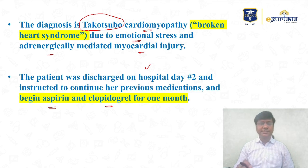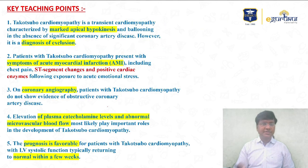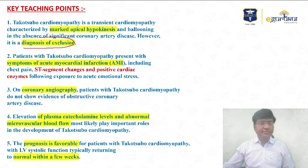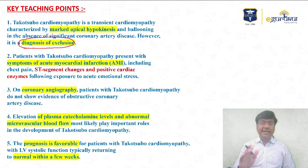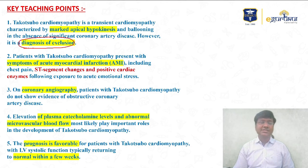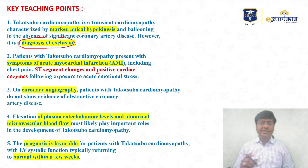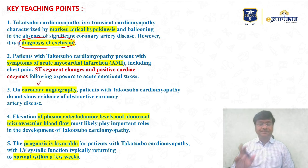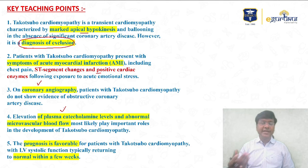Regarding teaching points on Takotsubo cardiomyopathy: it is always a diagnosis of exclusion. You must rule out coronary artery disease first. Only if the angiogram is normal do we consider Takotsubo cardiomyopathy. There should be a background history of emotional stress. The 2D echo will show apical hypokinesia, the ECG will show ST segment elevation, and cardiac biomarkers will be elevated — but the angiogram will be absolutely normal.